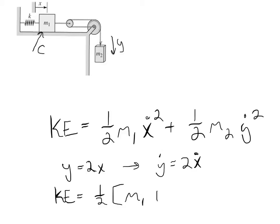So I'd have m1 for the first term. And for the second term, if I were to put the 2x dot in place of the y dot, that would actually give me 4x dot squared. So this would be plus 4m2 times x dot squared.